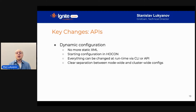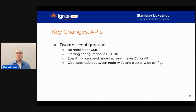For configuration, Ignite 2 uses static XML files, and Ignite 3 will use dynamic configuration. Dynamic configuration is stored in the cluster itself and can be changed via REST or CLI at any time. The bootstrap configuration is provided to the cluster in HOCON format, which is a markup language well-suited for specifying configurations.